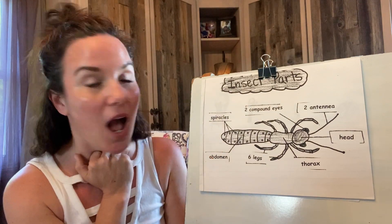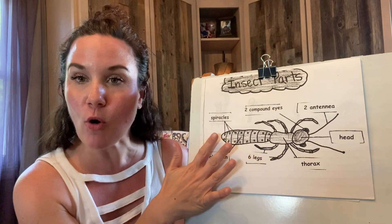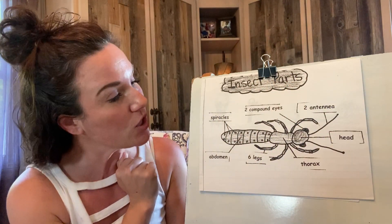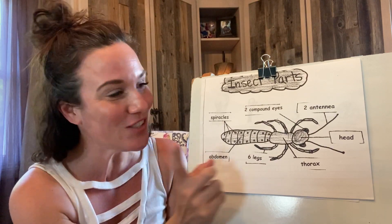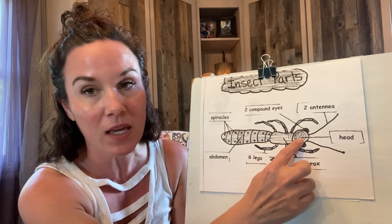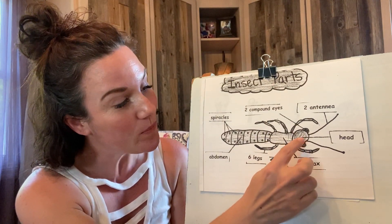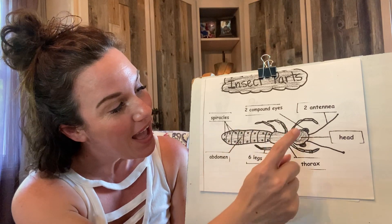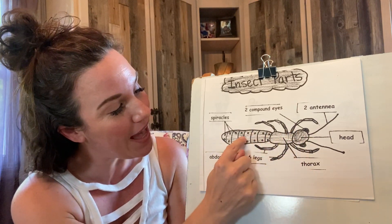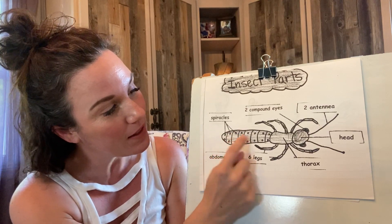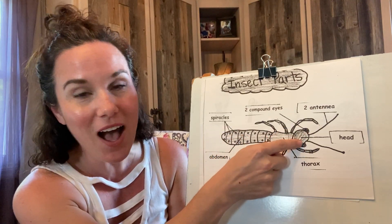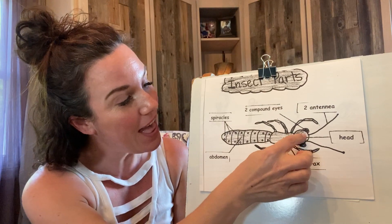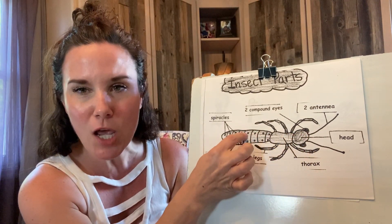Now here I have my picture of an insect. Before we do our writing, I want to go over all of the parts of the insect. And we can even sing our song. Let's start with the head and you can touch the screen with me. Here we go. Head, thorax, abdomen, abdomen, abdomen. Head, thorax, abdomen, abdomen. Compound eyes, antennas, spiracles. Head, thorax, abdomen, abdomen.